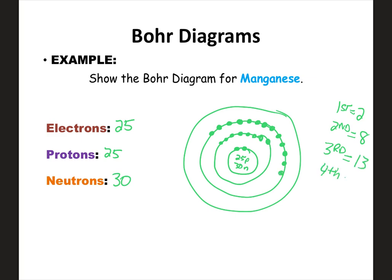The fourth ring gets just two electrons. Totaling it up: 2 plus 8 plus 13 plus 2 gives you 25. People often mix this up because the third ring can hold 18 and they want to fill it all the way. But you don't put 15 in the third ring for manganese, even though it can hold 18.